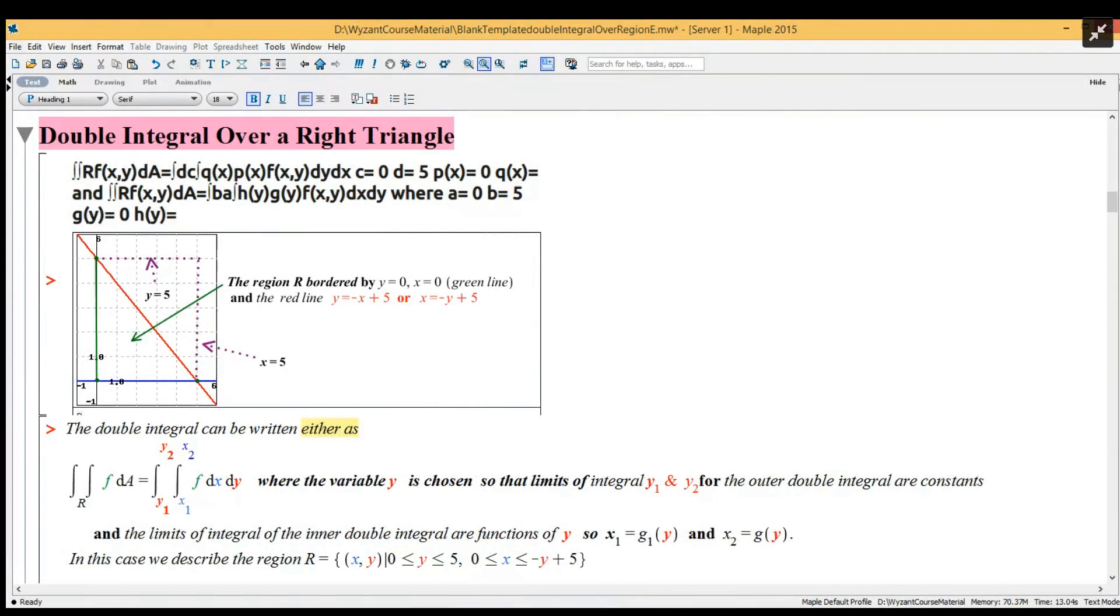So this one here I have the region in question that was posted with the question and I kind of added to it. We have the green line, so the region R is bordered by y equals zero.